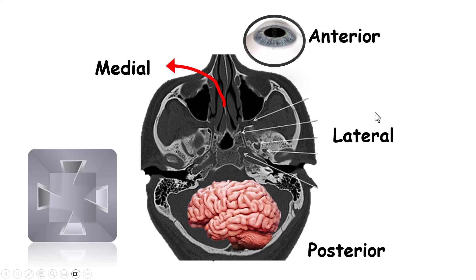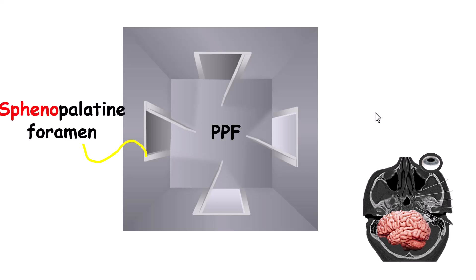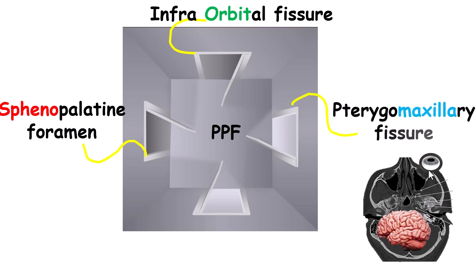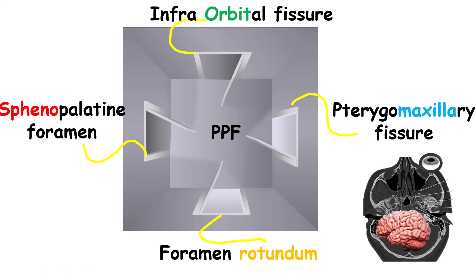Now we're going to name each of the doors leading towards this pterygopalatine fossa room. The name of each door — or opening — tells us where they go. Starting from the medial, we have the sphenopalatine foramen that goes medially towards the sphenoid sinus. We have the inferior orbital fissure that goes towards the orbit. We have the pterygomaxillary fissure that goes laterally, so the maxillary sinus will be lateral. And in the back we have the foramen rotundum, which is for a cranial nerve that goes towards the brain.